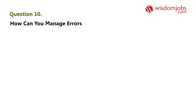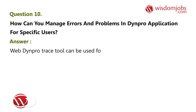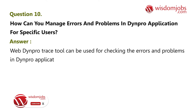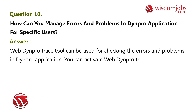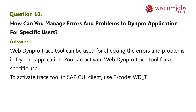Question 10: How can you manage errors and problems in a WebDynpro application for specific users? Answer: The WebDynpro trace tool can be used for checking errors and problems in a WebDynpro application. You can activate the WebDynpro trace tool for a specific user. To activate the trace tool in the SAP client, use the appropriate T-code.